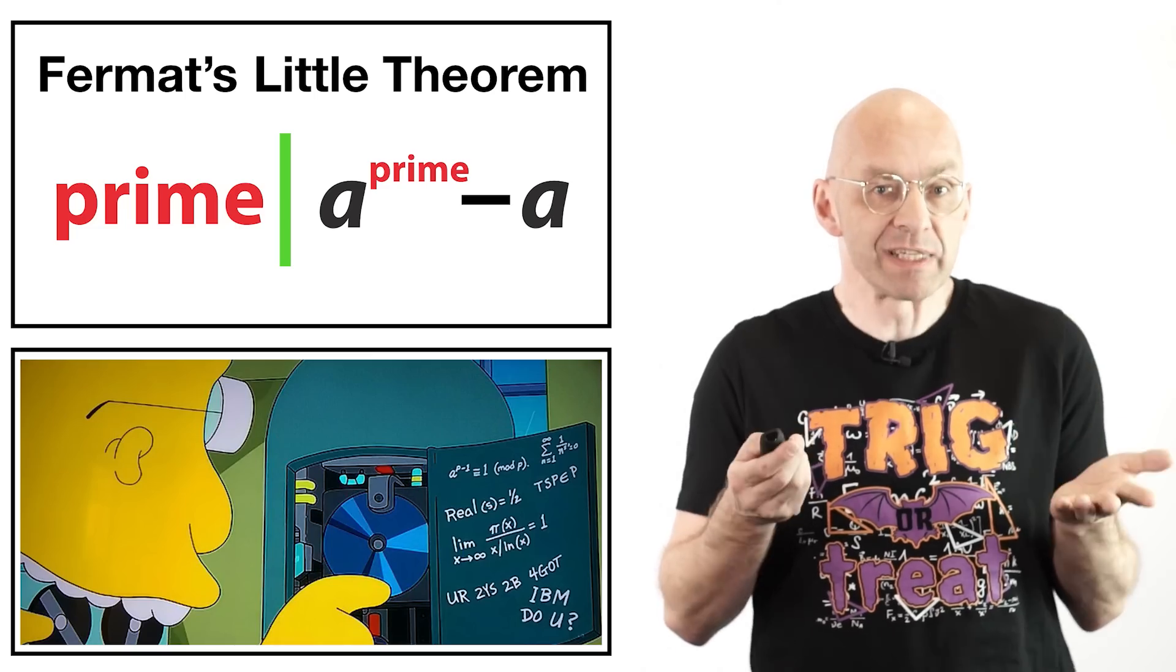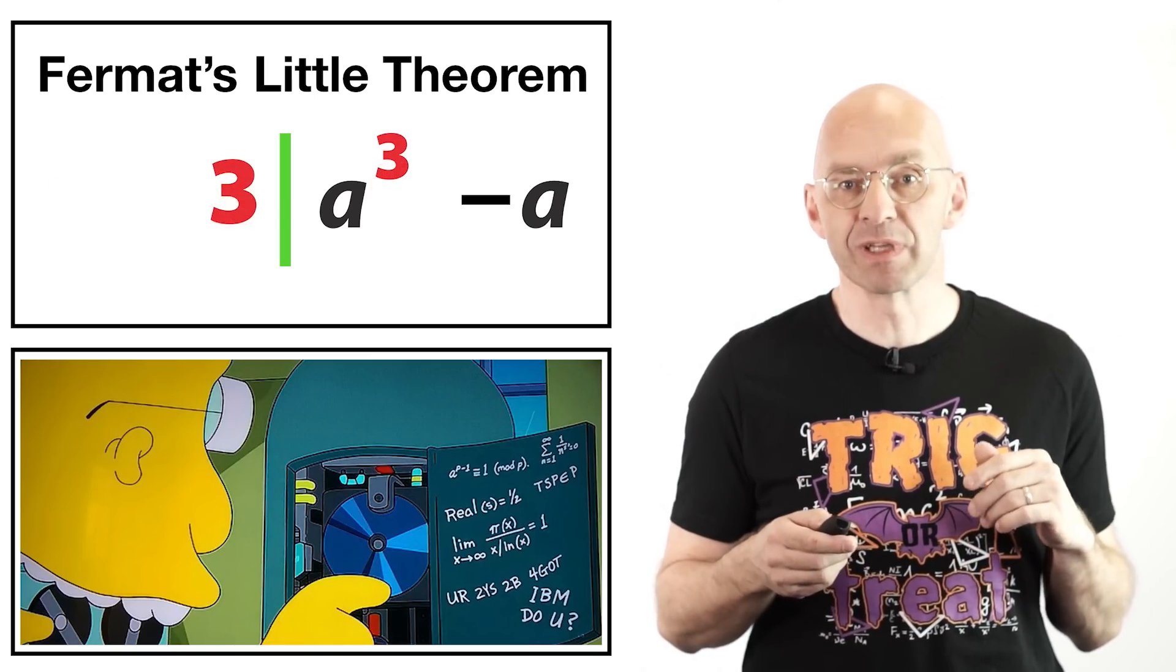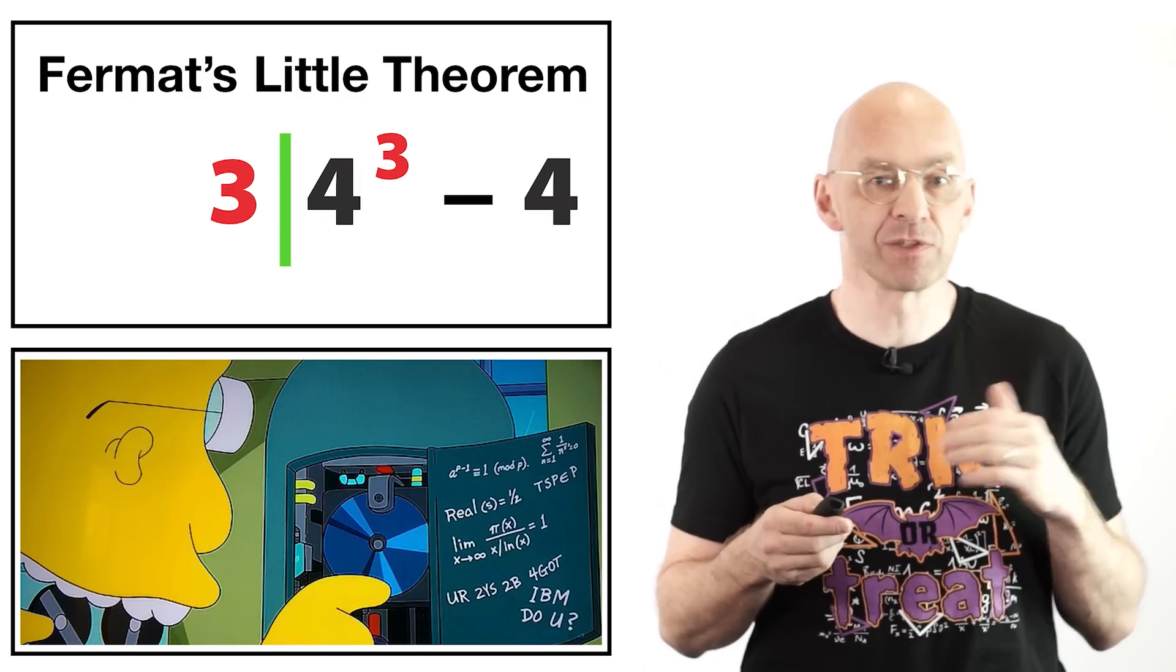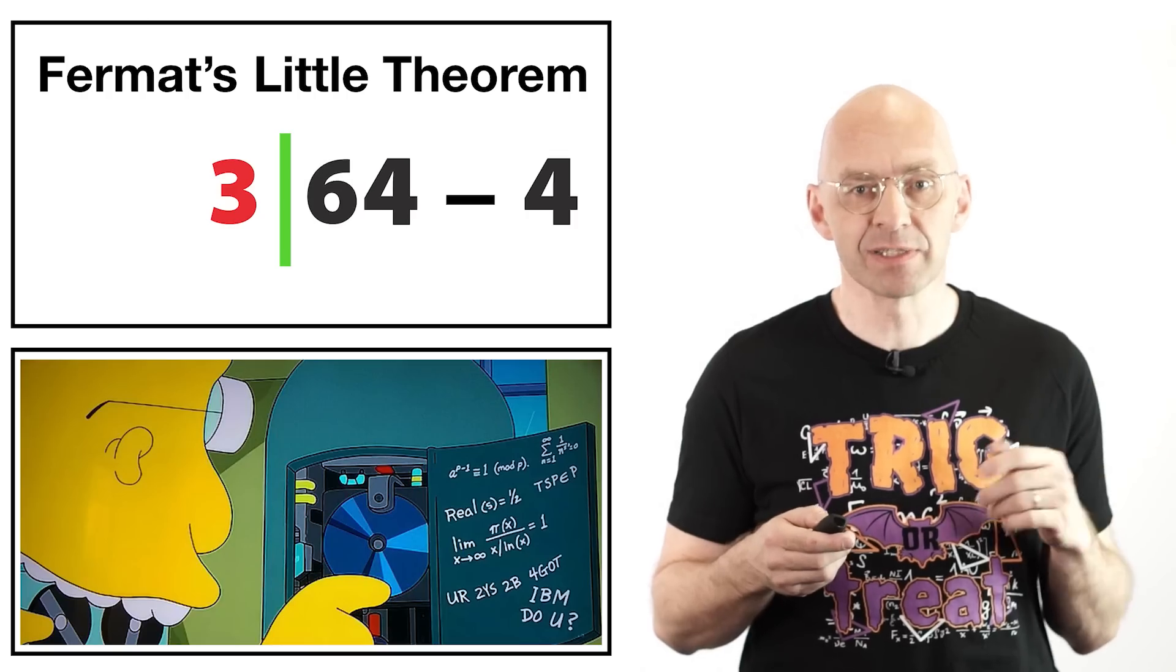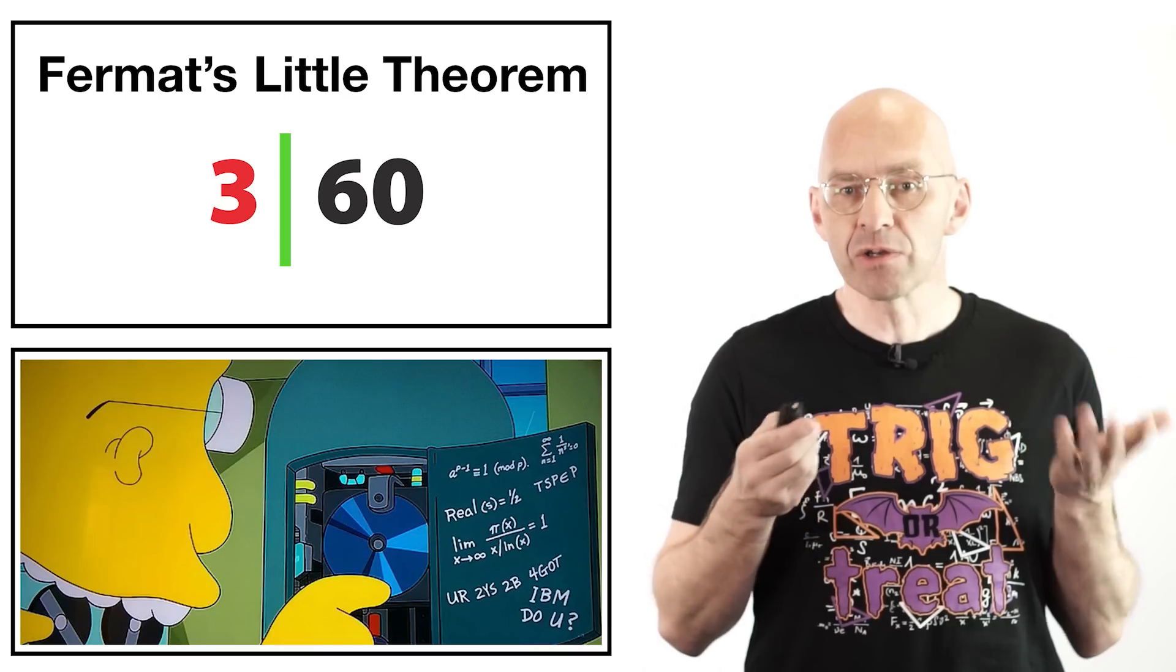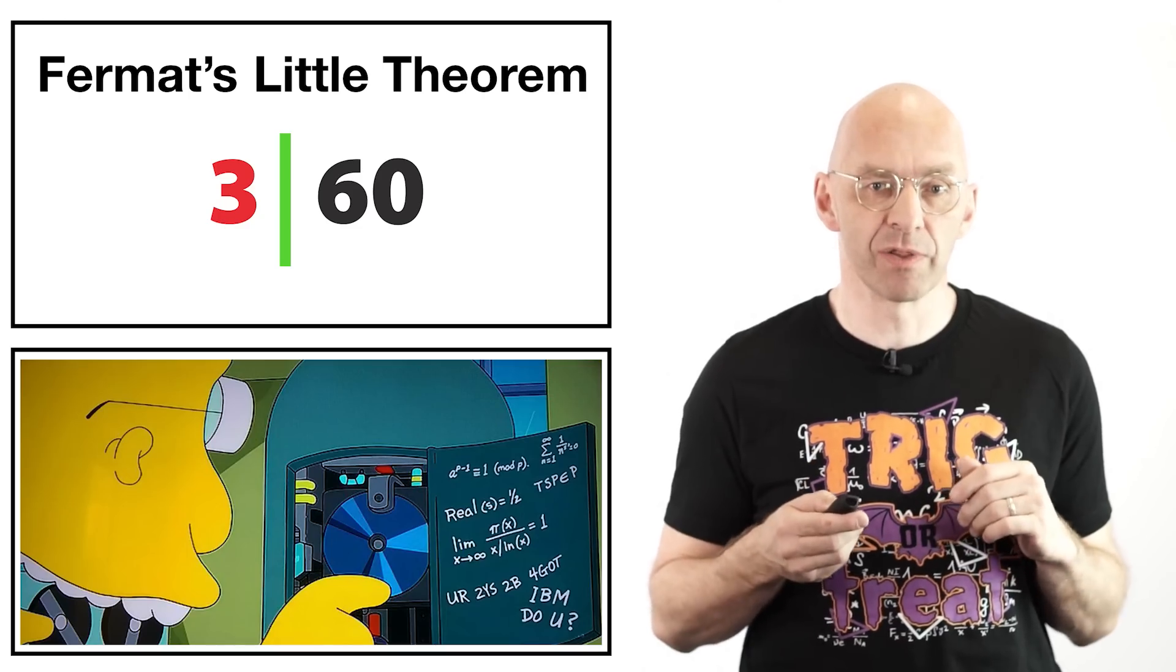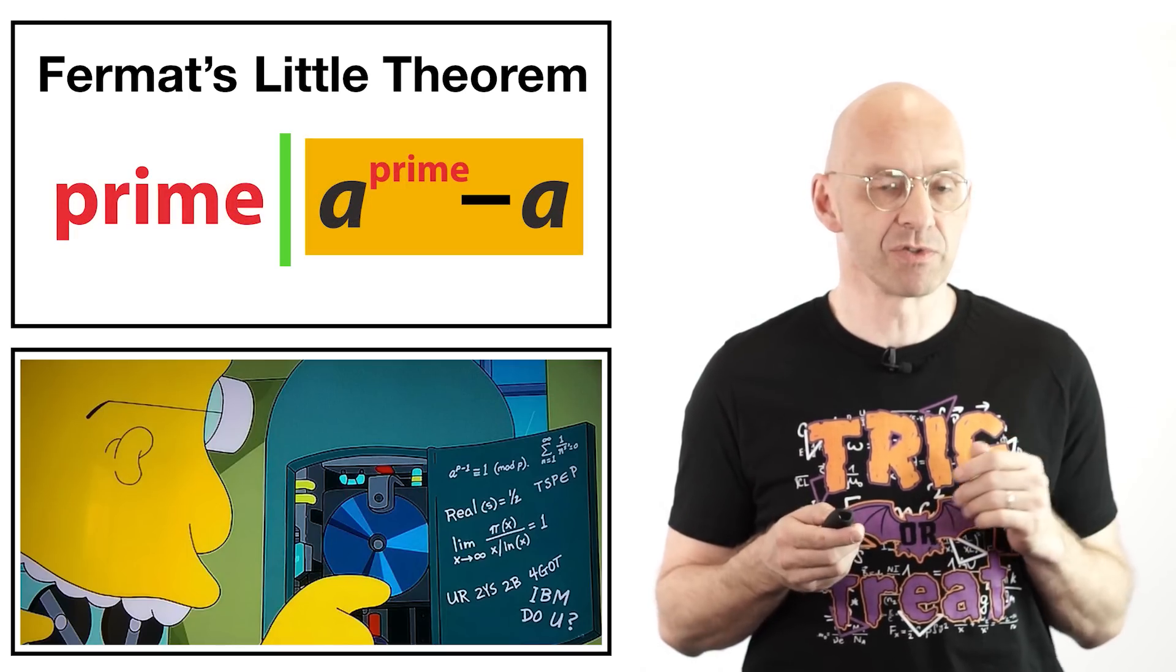For a really simple example, let's choose our prime to be 3 and the integer to be 4. Fermat's little theorem then tells us that 3 divides 4 cubed minus 4. Of course that's easy to check directly since 3 divides 64 minus 4 which is equal to 60. But without doing the arithmetic and just by looking at the expression on the right it's not at all obvious why this should be true, right?